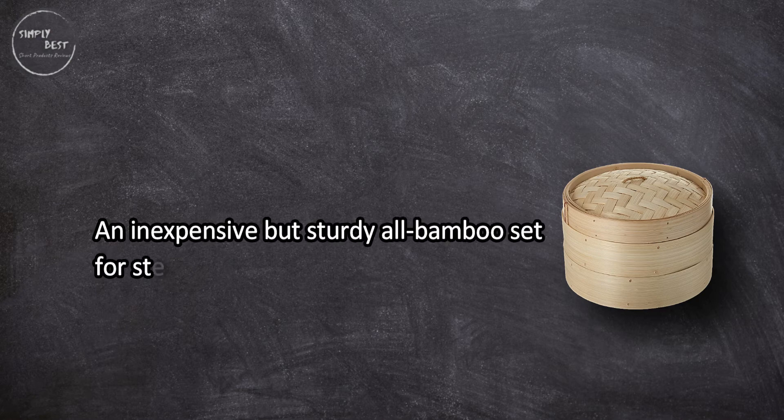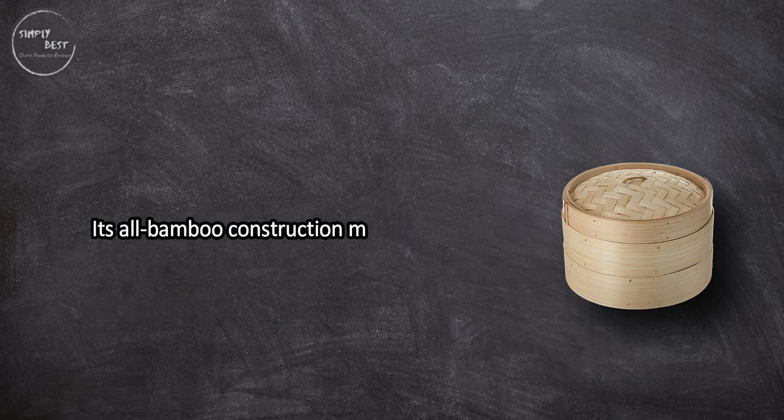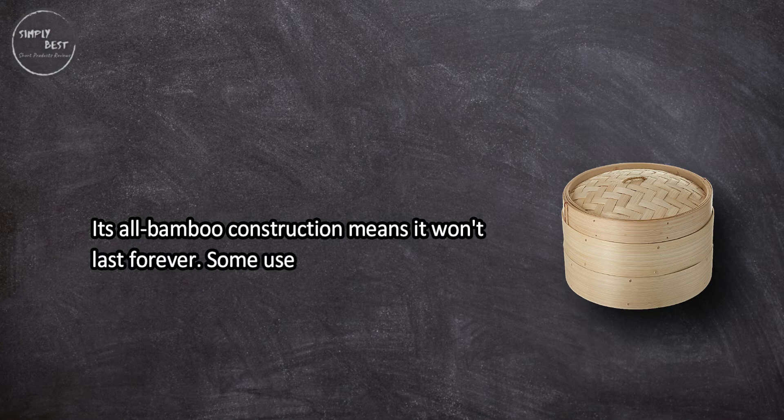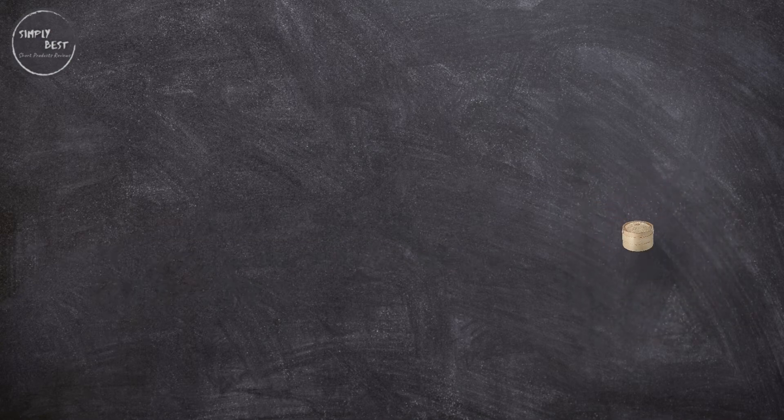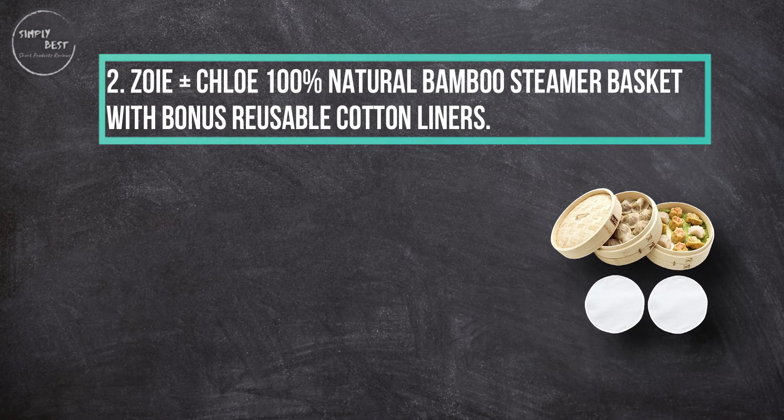Its all-bamboo construction means it won't last forever. Some users complained that it was splintery upon arrival. At number two: Zoe plus Chloe 100% natural bamboo steamer basket with bonus reusable cotton liners.